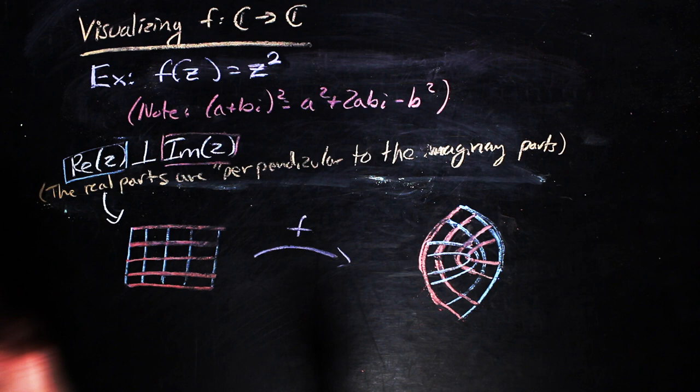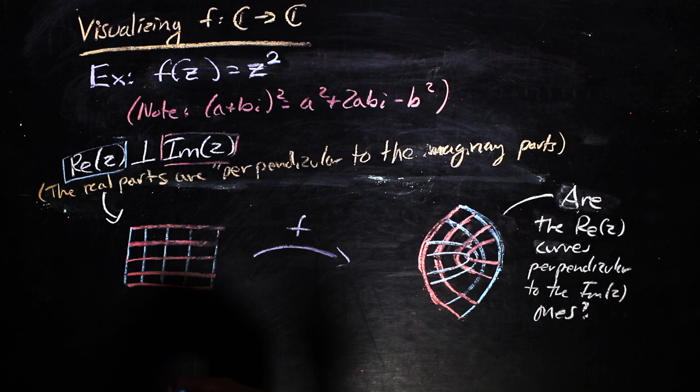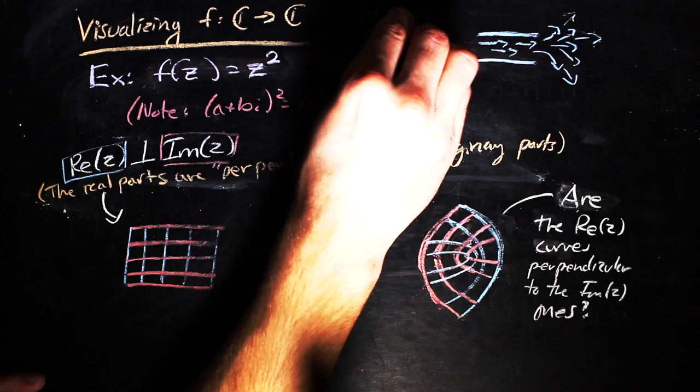So, one natural question to ask is, how does the function change the geometric structure of these grid lines? And if it does, where does it change the geometric structure? The answer to this question is incredibly helpful when studying things like fluid dynamics, electrostatics, and general relativity. But anyhow,